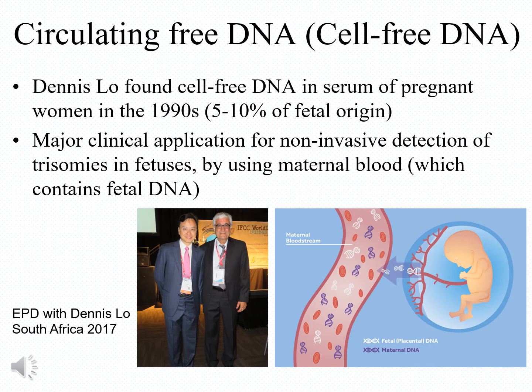The story of Circulating Free DNA started in the early 1990s, when my friend and colleague Dennis Law — shown in the picture with me in South Africa in 2017, where we shared an award — identified for the first time that fetal cell-free DNA is present in the blood of pregnant women at the level of 5 to 10 percent. Dennis went on to develop important applications of circulating free DNA in pregnancy and a non-invasive method for detection of fetuses with chromosomal abnormalities such as Down syndrome.